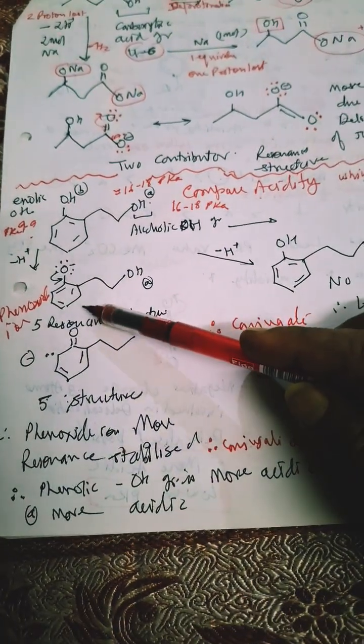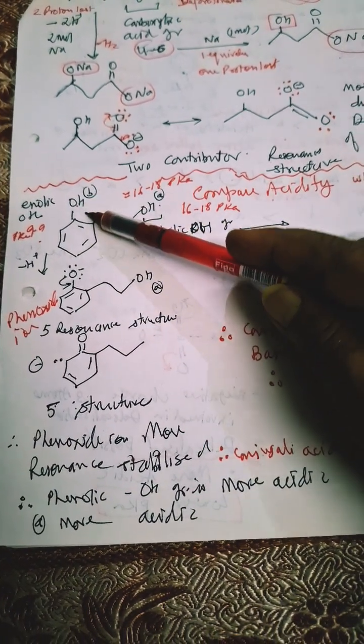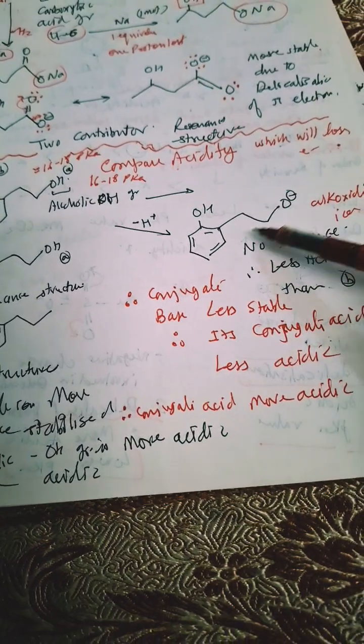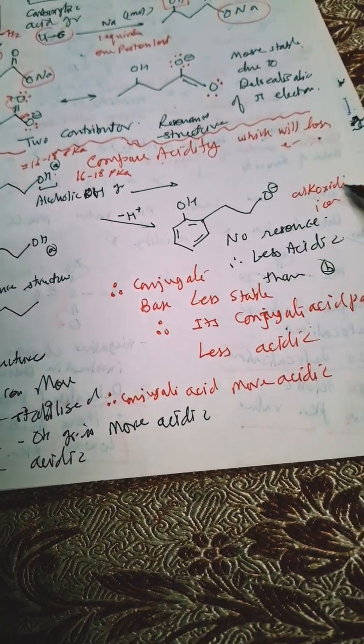Conjugate base is most stable in this case. That is why this H is lost very easily and this is more acidic than alcoholic OH. Alcoholic OH when H is lost, alkoxide ion is obtained.